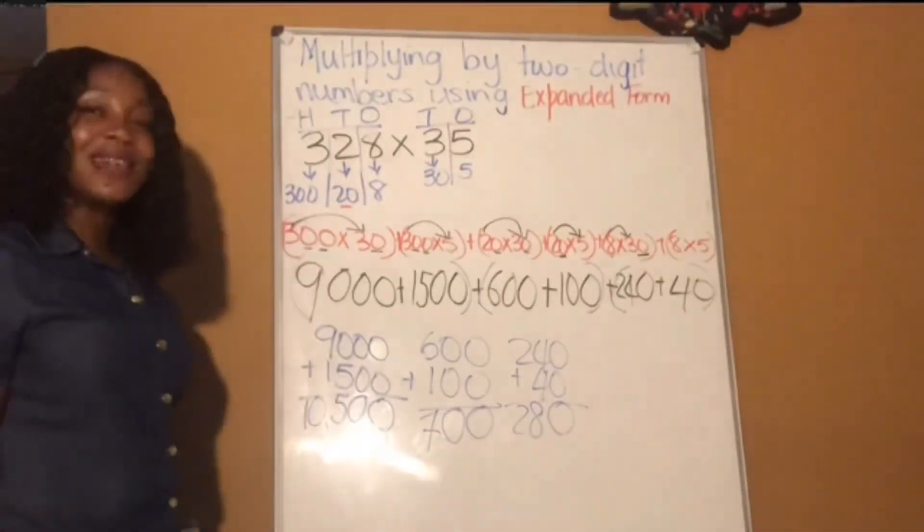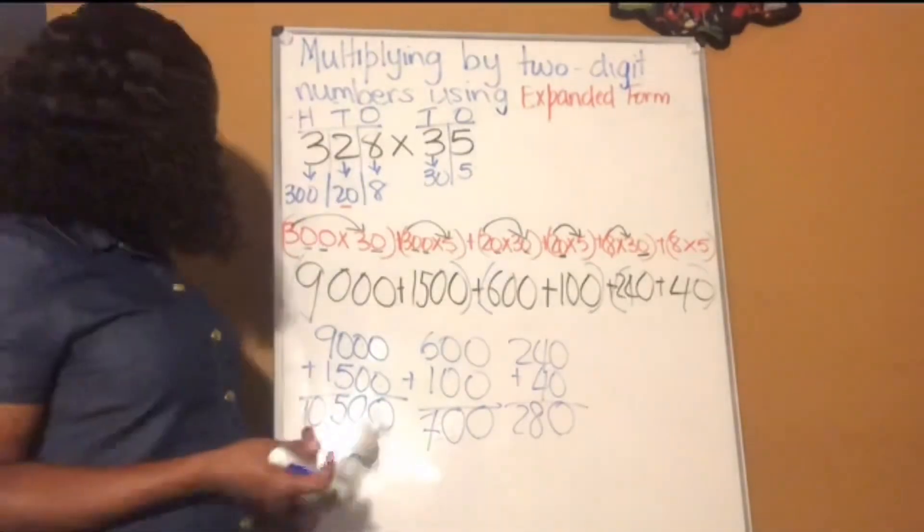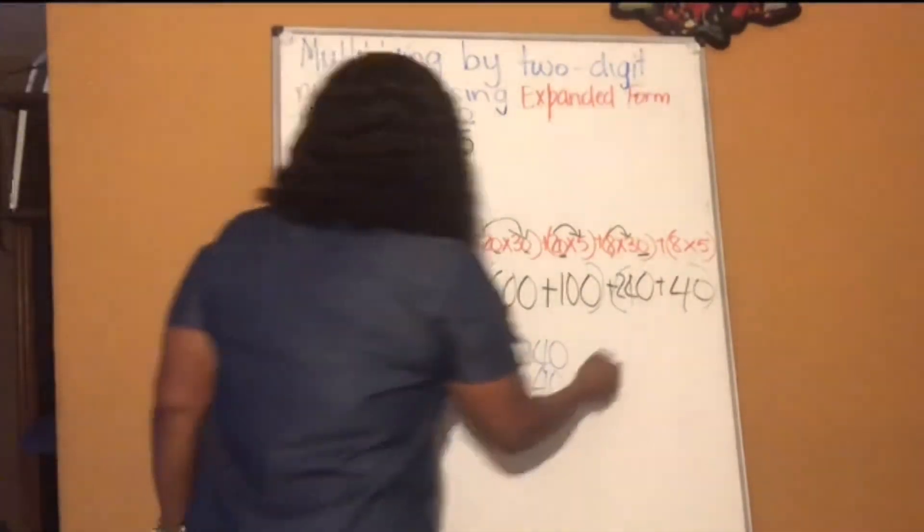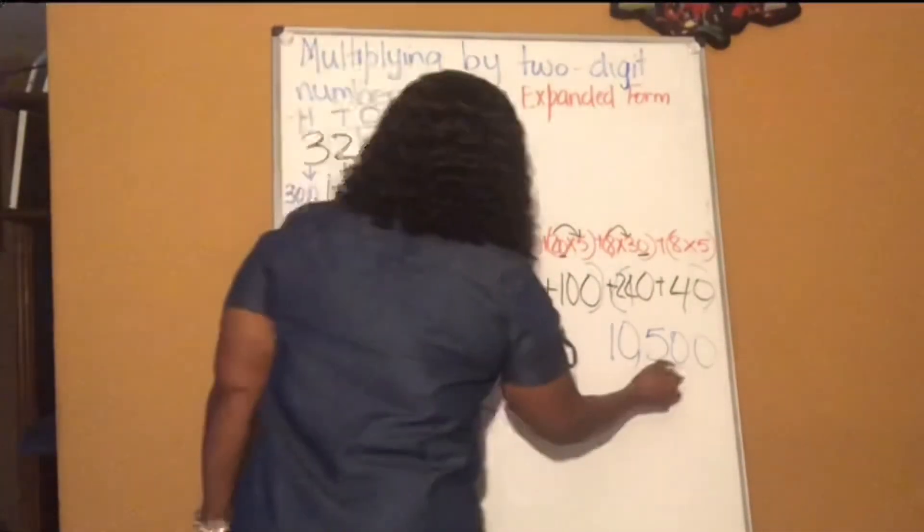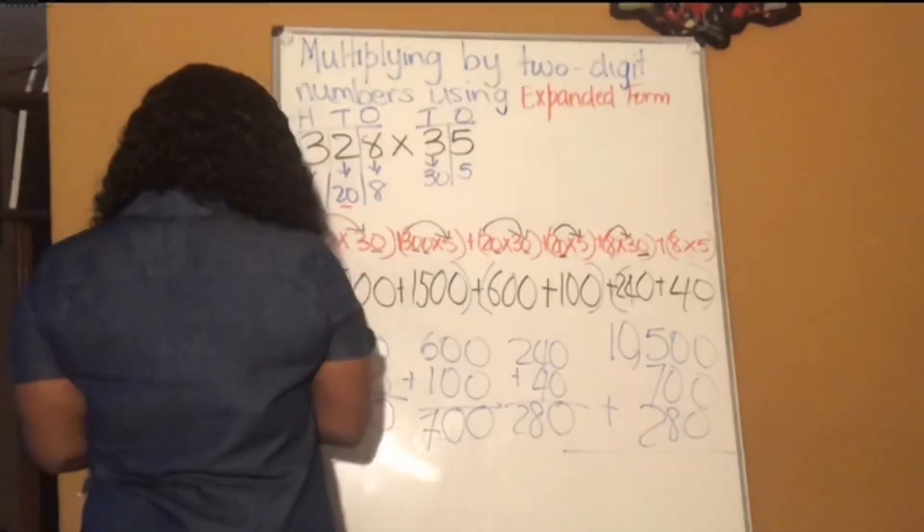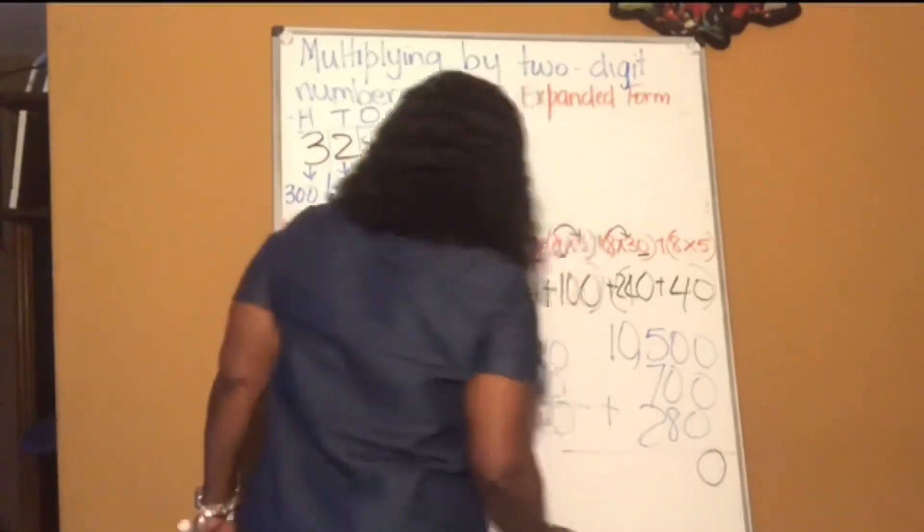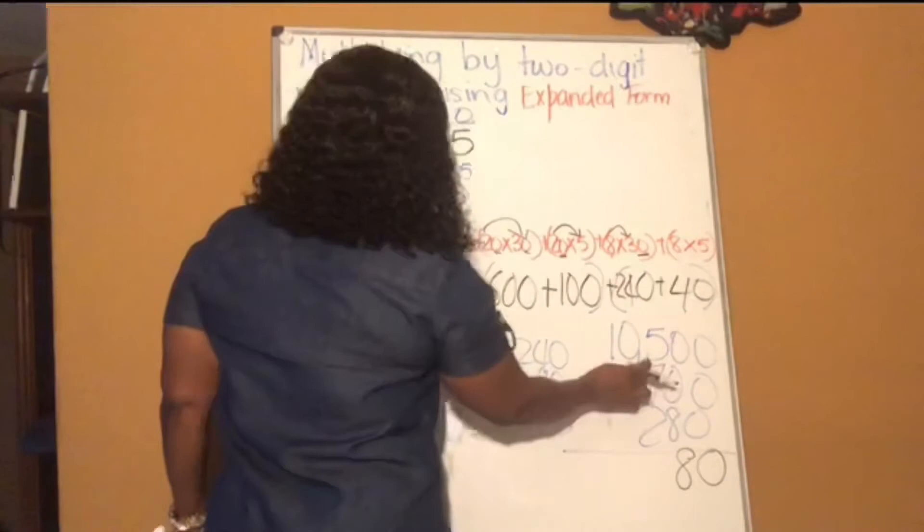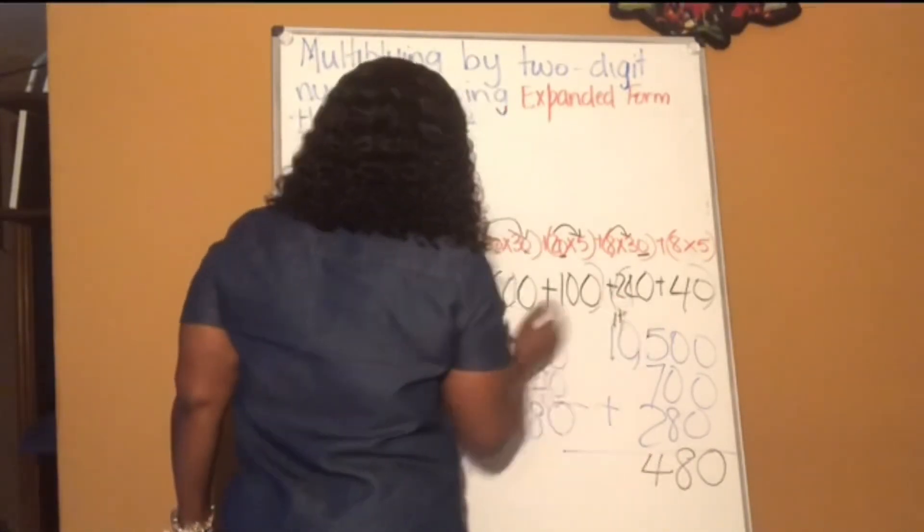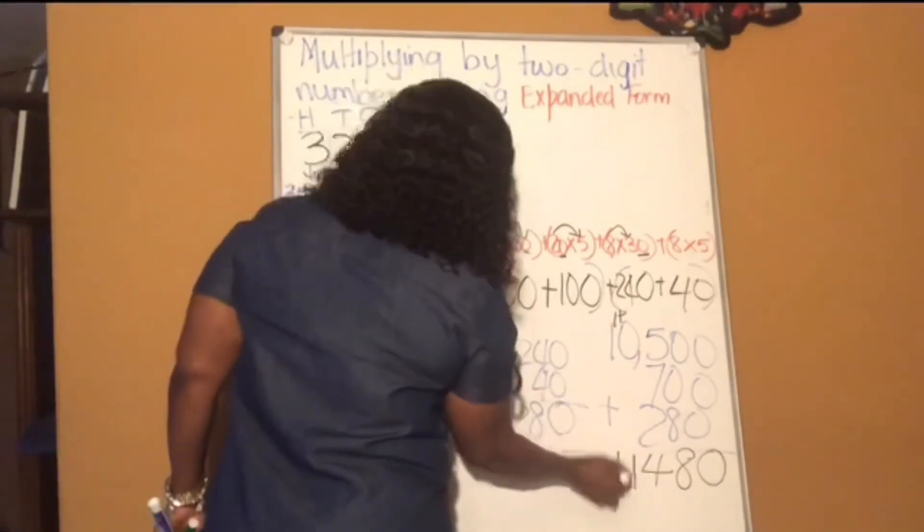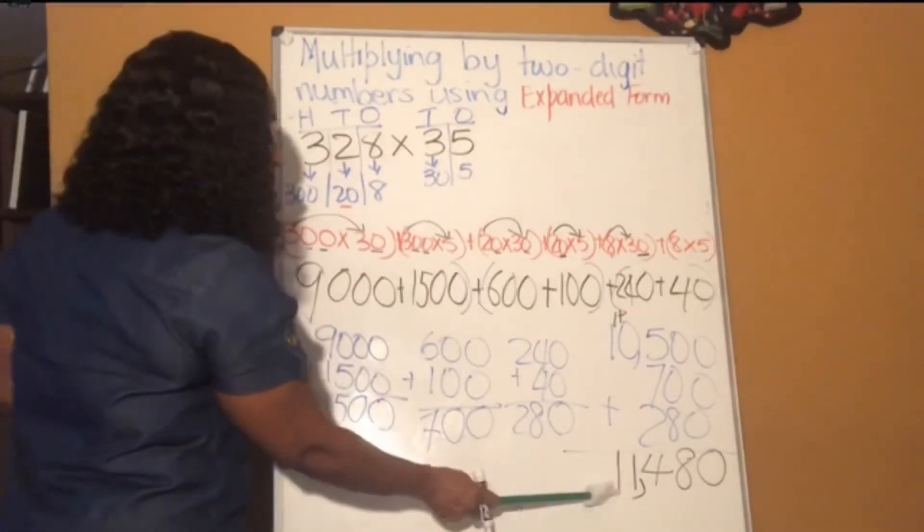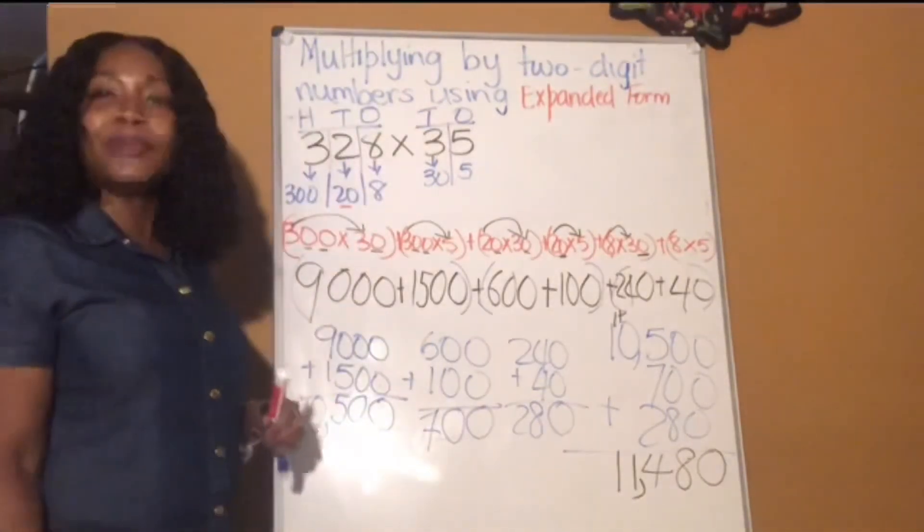Now we have 3 numbers that we need to add together. If you are not comfortable adding 3 numbers, add the first 2. Then when you get your answer, you add it with 280. All right? So 10,500 plus 700 plus 280. 0 plus 0, that's 0. 8 plus 0, that's 8. 7 plus 2, that's 9. And 5 plus 0, that's 5. 0 plus 1 is 1 and 1 plus nothing is still 1. So 328 times 35 is 11,480.